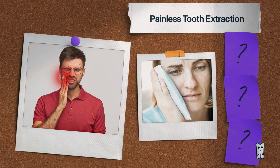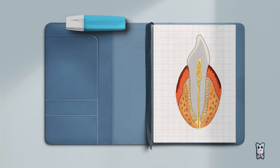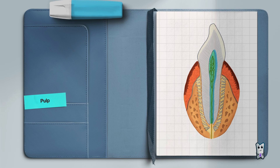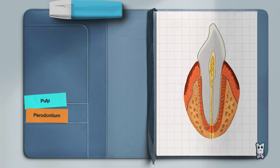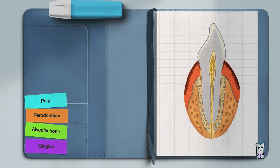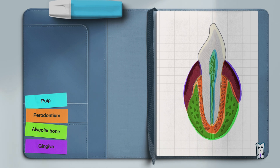To achieve this, you need to understand the innervation of the teeth and the tissues that surround them. The nerves that enter the tooth are part of the pulp. Around the tooth there is the periodontium, which is in direct contact with the alveolar bone. The gingiva connects to the tooth through the gingival-dental junction. If we anesthetize these four structures, we can achieve painless extraction.